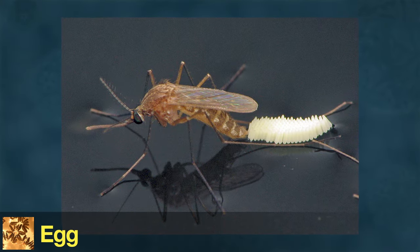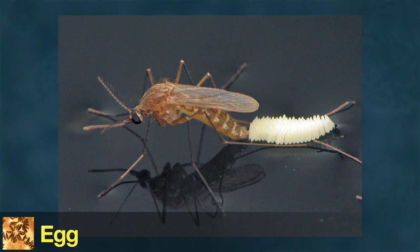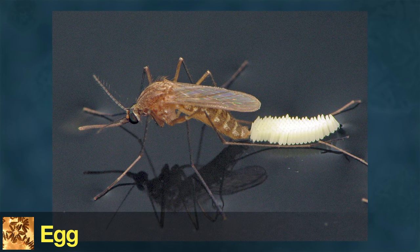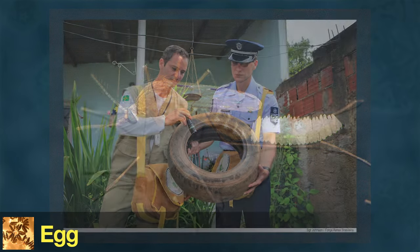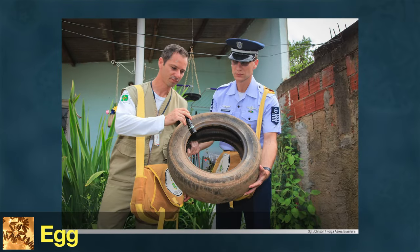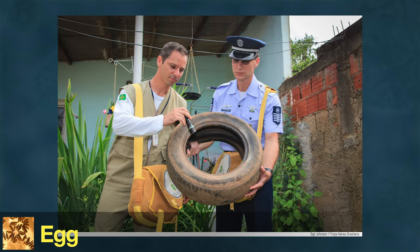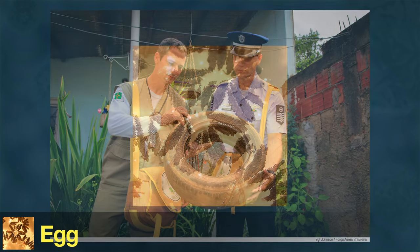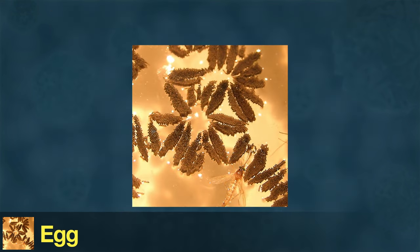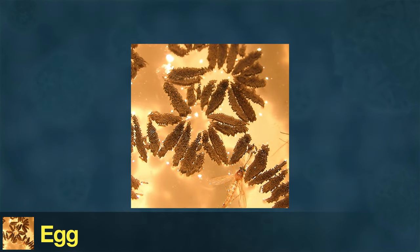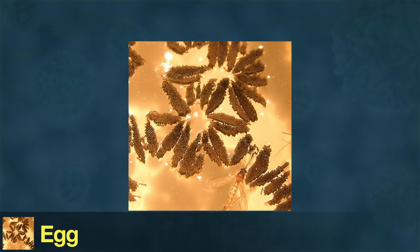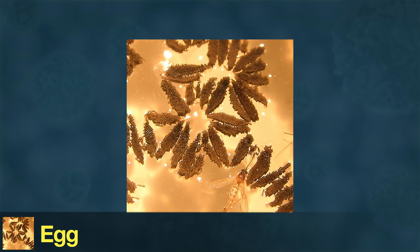Female mosquitoes lay eggs on or near a body of still water. Some species prefer natural bodies of water, like ponds. Others prefer water found in containers like buckets, flowerpots, or discarded tires. Each female mosquito may lay hundreds of eggs. As long as they have water, the eggs can take as little as two days to hatch, and may hatch faster in warmer temperatures.